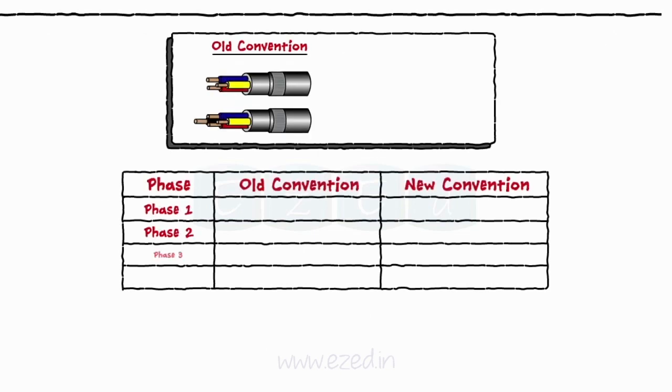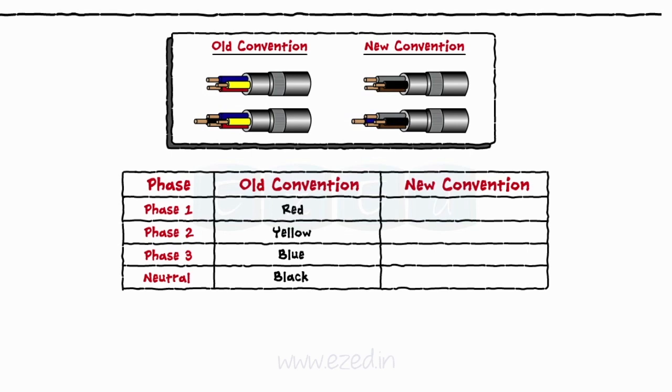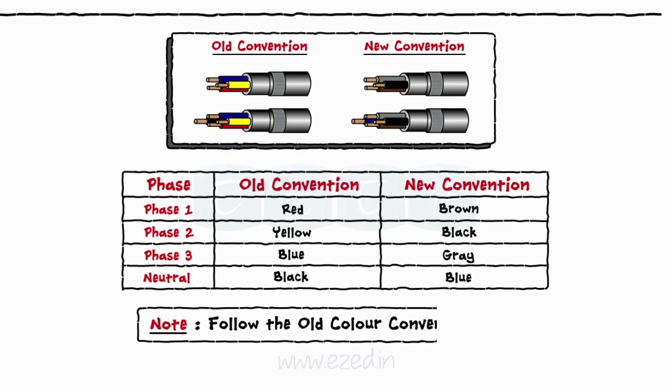Previously these signals were represented in red, yellow and blue colors. But nowadays they are represented as brown, black and grey. The fourth blue color wire is called the neutral wire which we will see later. But we will follow the old color conventions only.